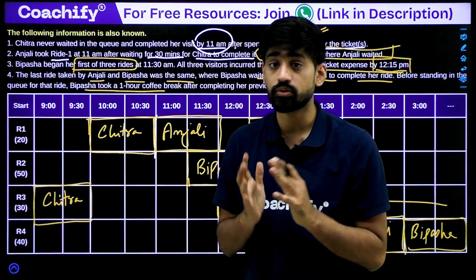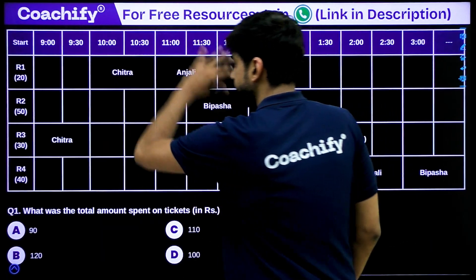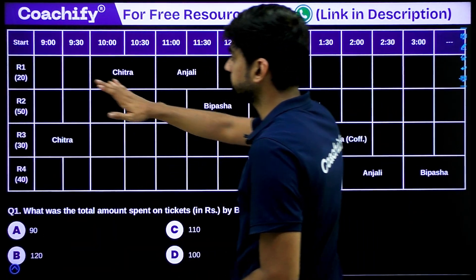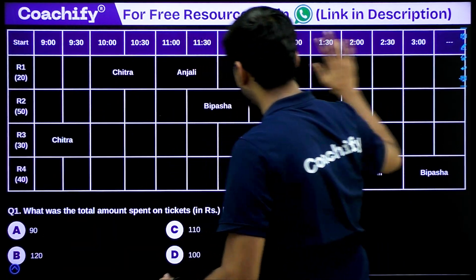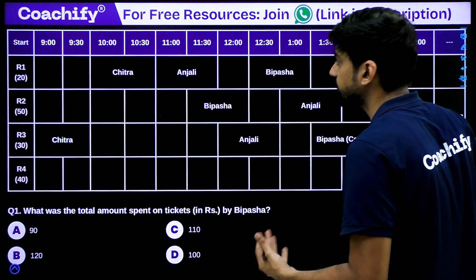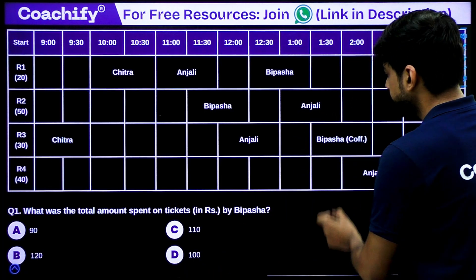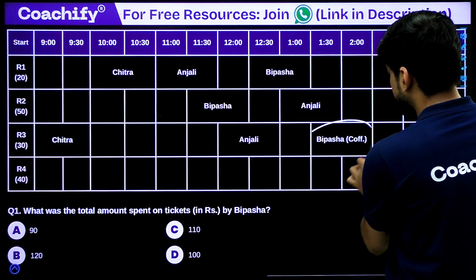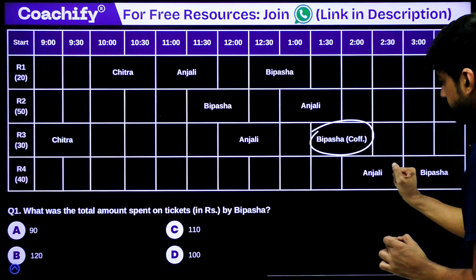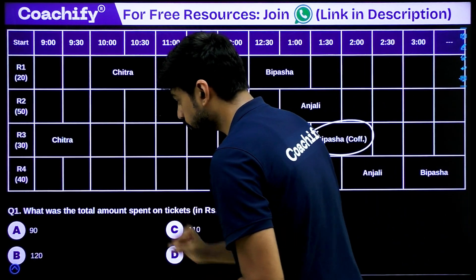The point about 'it was the only ride where Anjali waited' confirms that after ride 3, Anjali goes directly to ride 4 with no waiting — and ride 4 is indeed available for her. The solution table is now complete: showing each visitor's rides, time slots, and expenses. We now proceed to the questions.